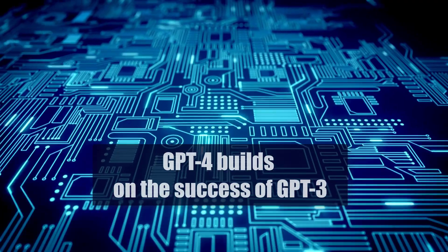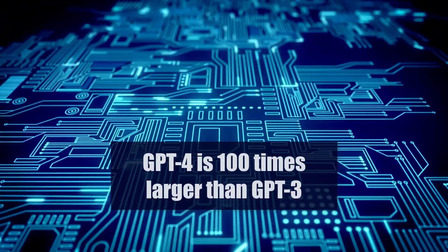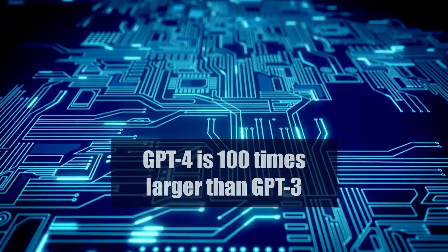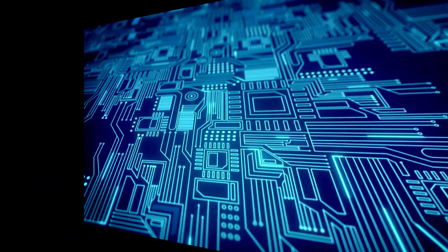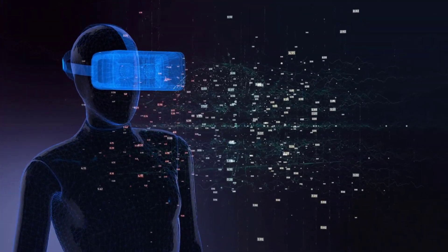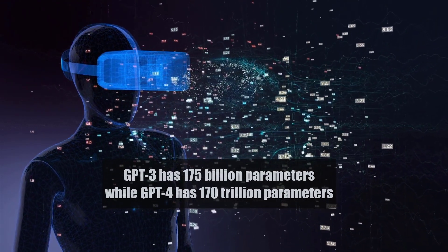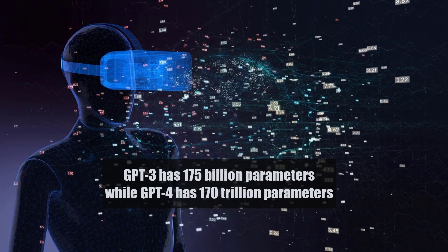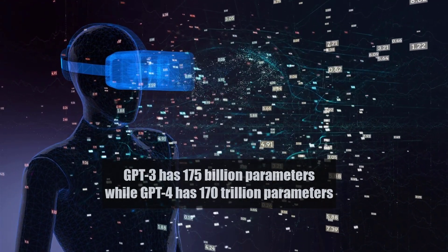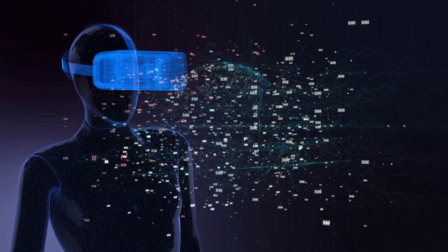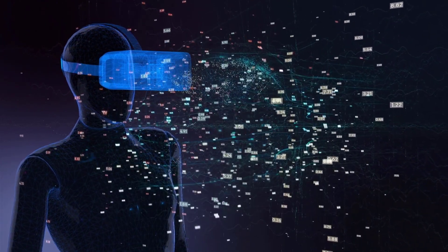GPT-4 builds on the success of its previous version, GPT-3. GPT-4 is 100 times larger than GPT-3. GPT-3 has 175 billion parameters, while GPT-4 has 170 trillion parameters. So GPT-4 is significantly larger and more powerful than GPT-3, allowing it to process text with greater accuracy and fluency.